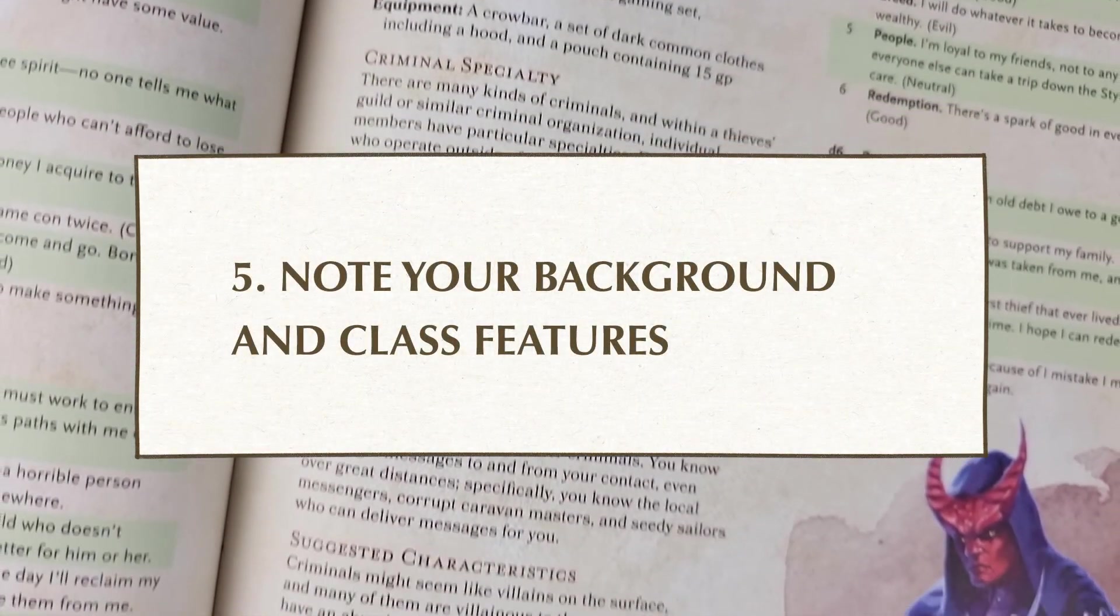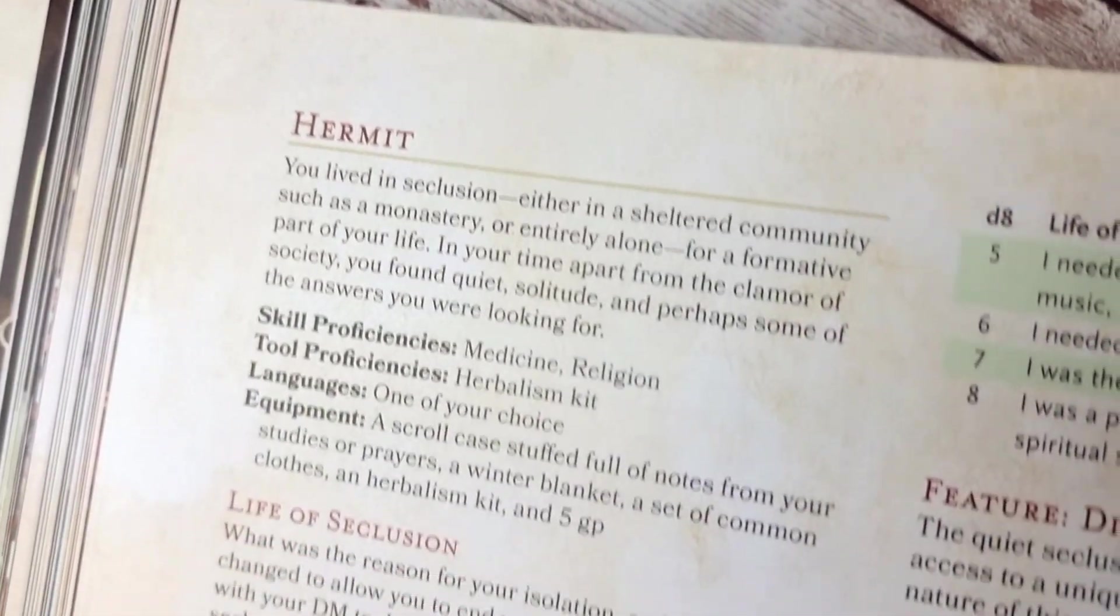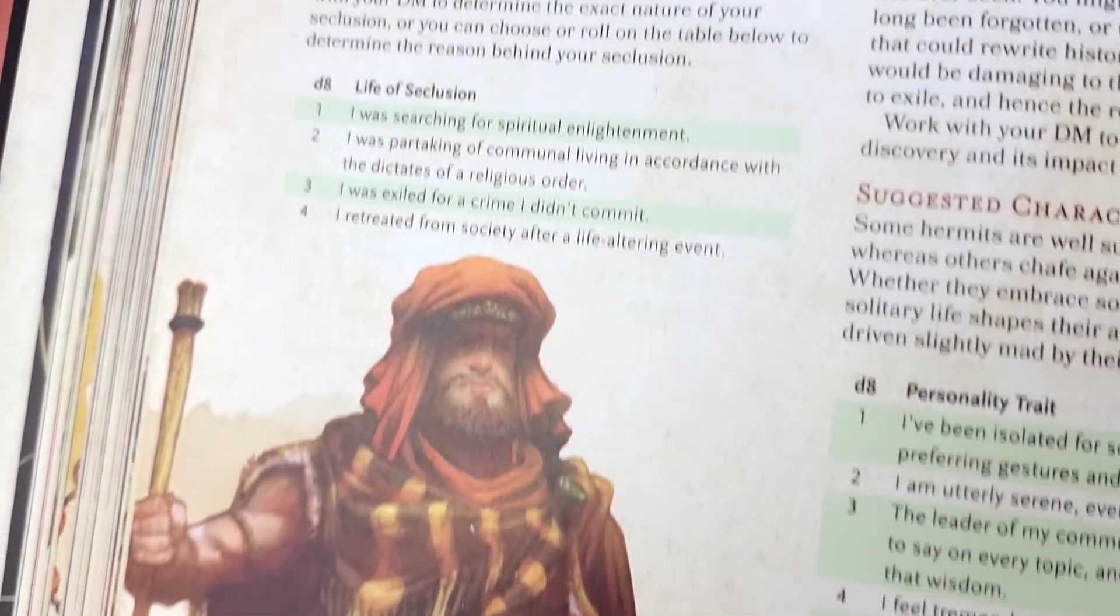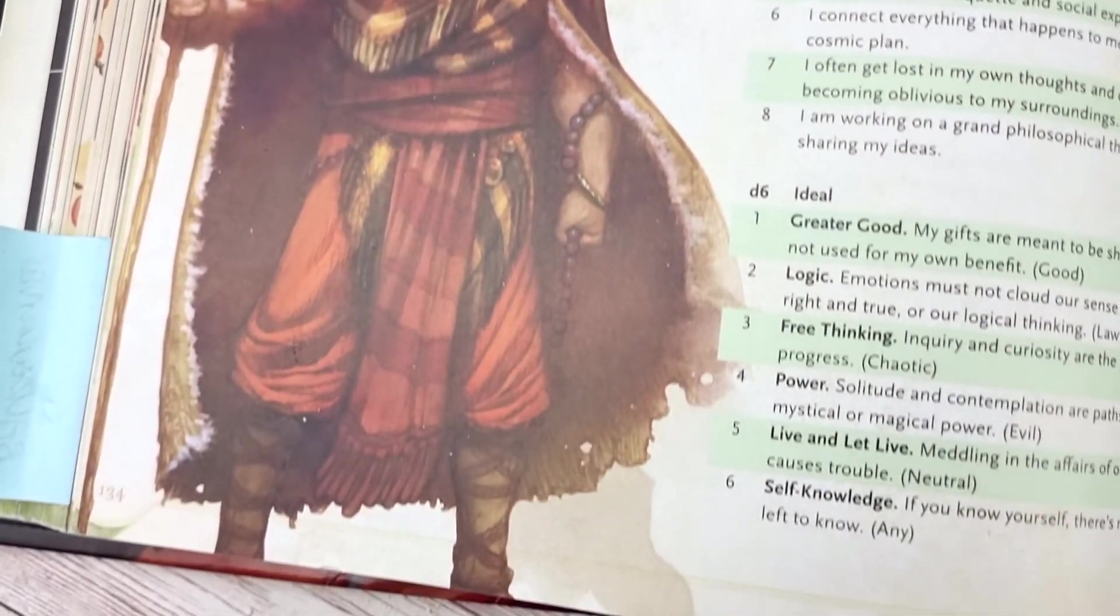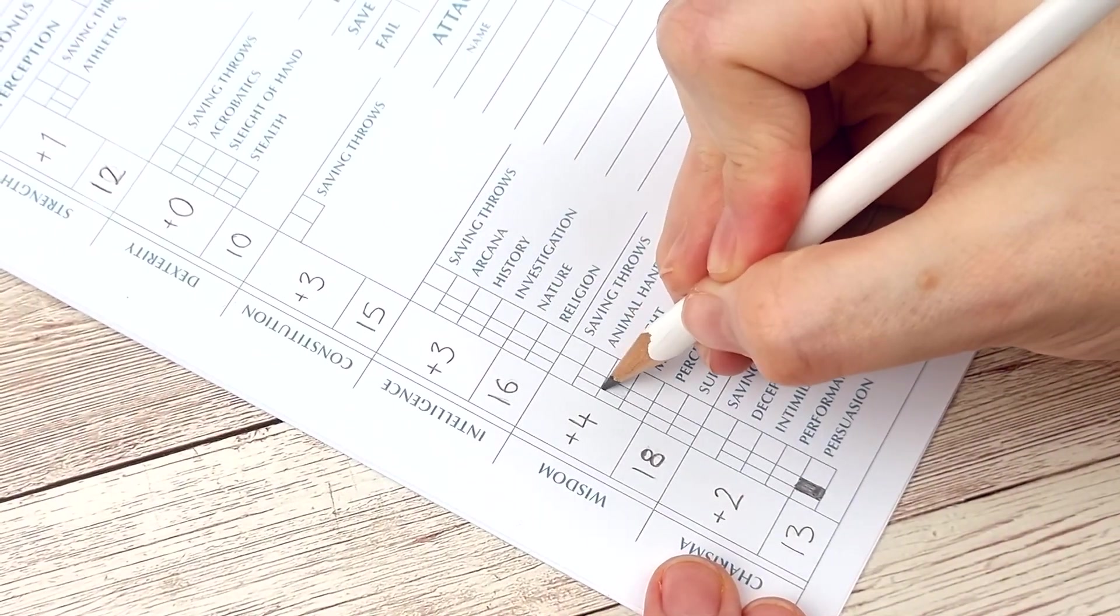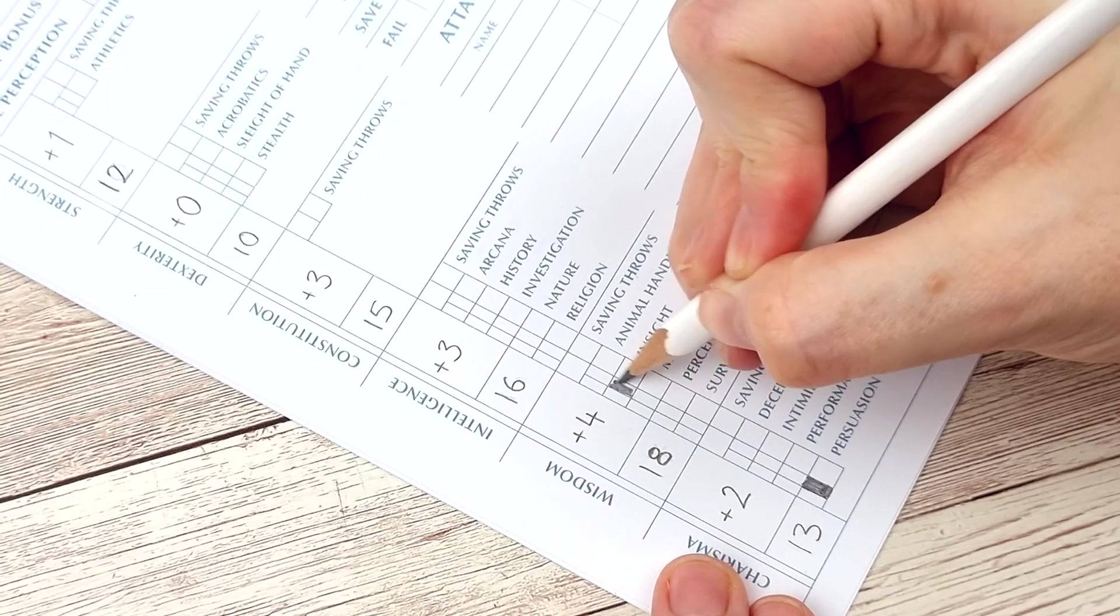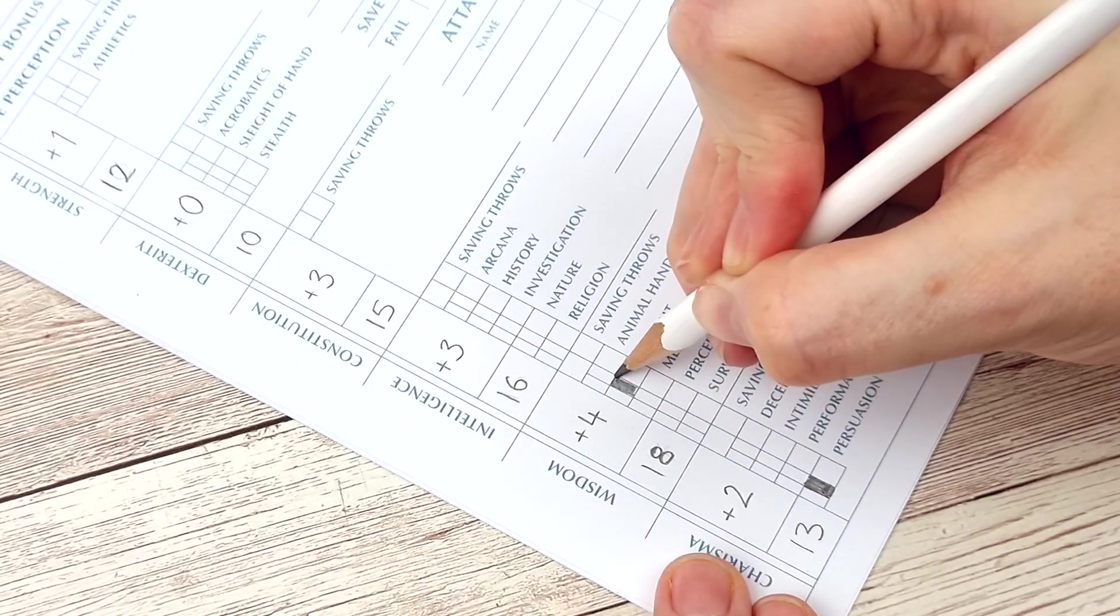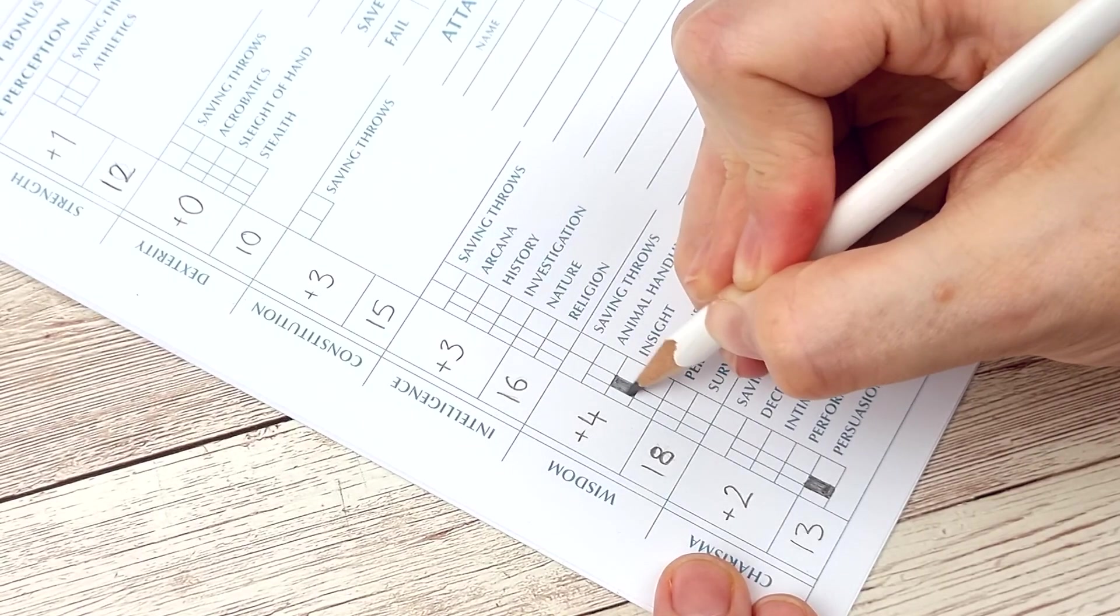Now it's time to note down the background and class features. Starting with background let's note the following. You can find this in the information provided with the background you've chosen for your character. Skill proficiencies. Your background means that you're particularly good at certain skills already.